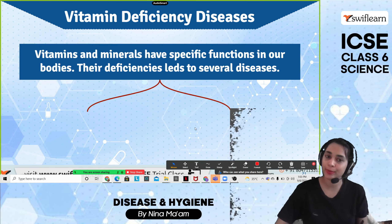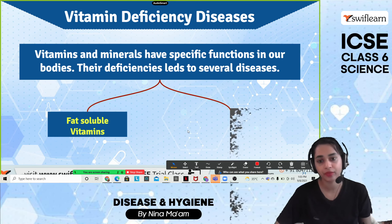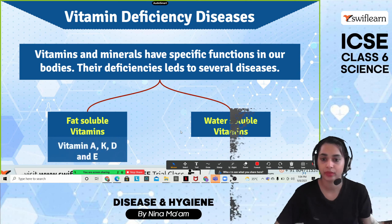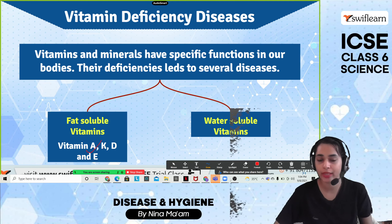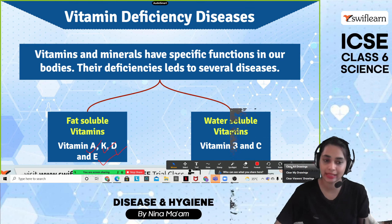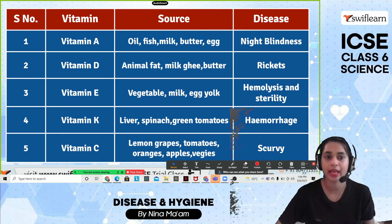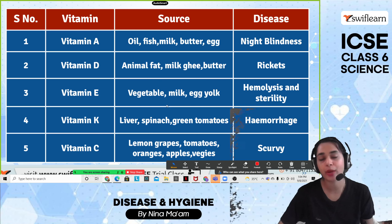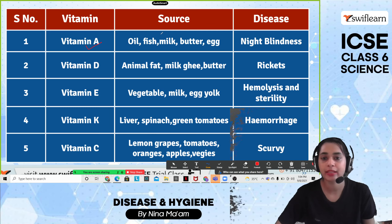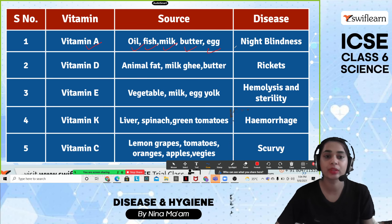Let's understand the sources and diseases caused by lacking certain vitamins. Vitamin A is found in fish oil, milk, butter, and eggs. Lack of vitamin A leads to night blindness. Vitamin D is found in animal fat, milk, and butter. Deficiency of vitamin D causes rickets. Vitamin E is found in vegetables, milk, and egg yolk; its deficiency causes hemolysis and sterility.